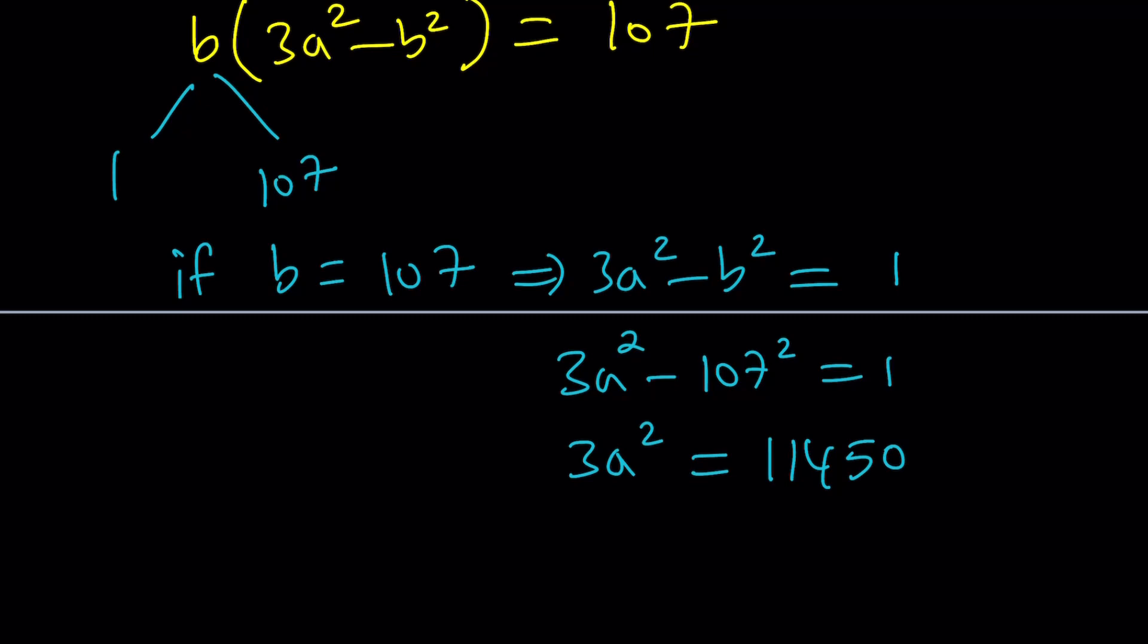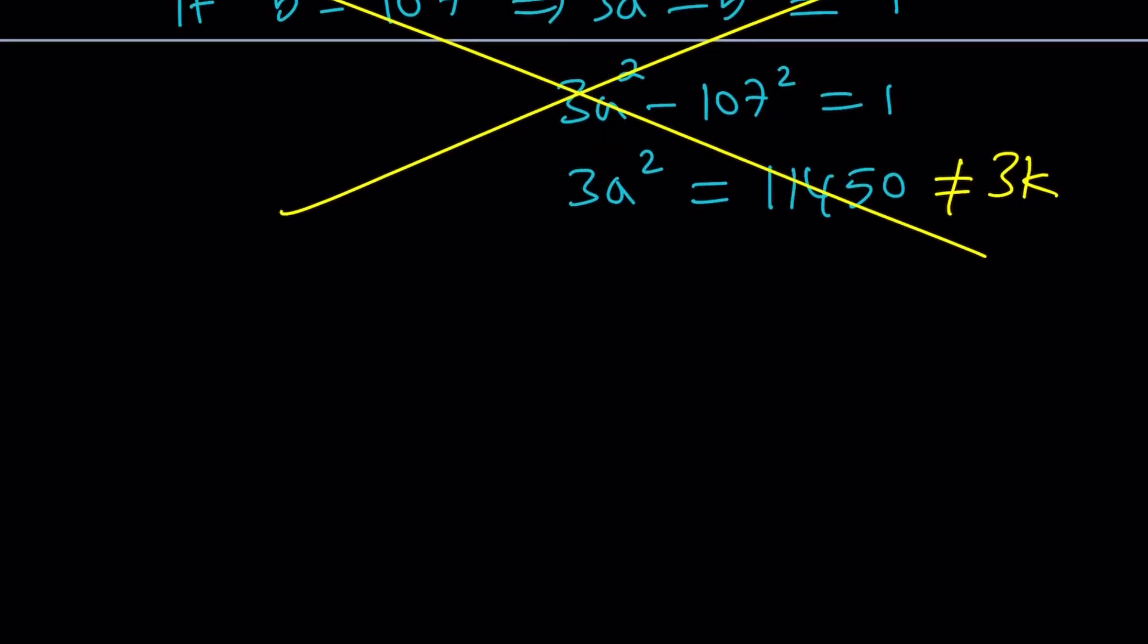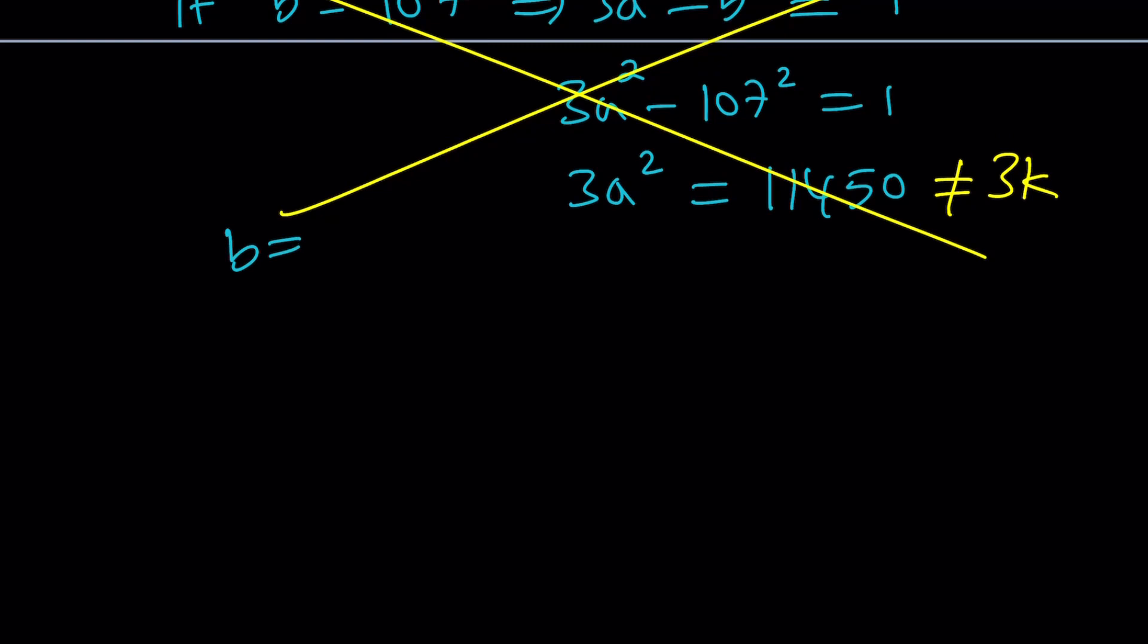1 plus 1 plus 4 is 6, which is divisible by 3. But 5 just messes it up. In other words, this is not equal to 3K where K is an integer. So this number is not divisible by 3. Therefore, this is not going to work. So B equals 107 doesn't give us any solutions. So we have to check. In other words, B does not equal 107.